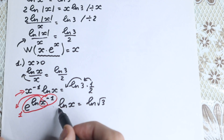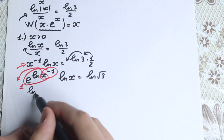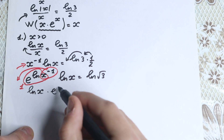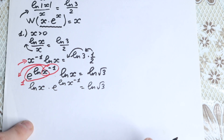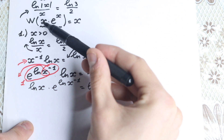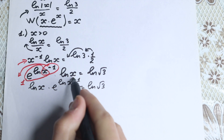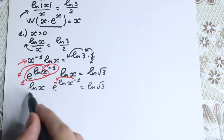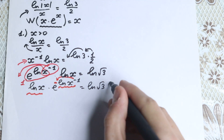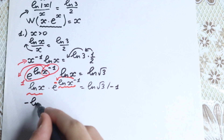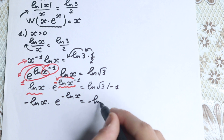Now let's change the order slightly. Writing natural log x first on the left-hand side: natural log x times e to the power (natural log x) to the minus 1 equals natural log of square root of 3. For Lambert W we need the same expression times e to the power of that same expression. But this minus 1 gives us a minus sign: natural log x and minus natural log x. So let's multiply both sides by minus 1: minus natural log x times e to the power (minus natural log x) equals minus natural log of square root of 3.